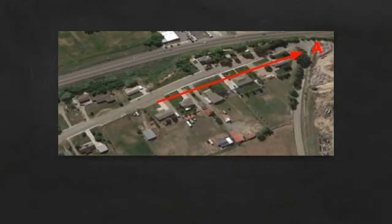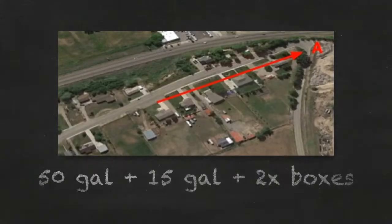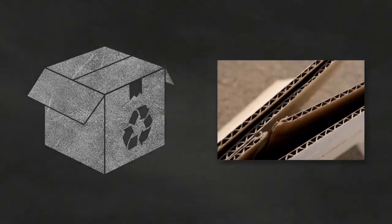A typical run starts in my driveway and goes something like this. I fill the mixer with 50 gallons of water, 15 gallons of paper, and 2 or 3 boxes. I break the boxes down so they'll lay flat on the surface of the water. Neither the cardboard nor the paper are shredded.